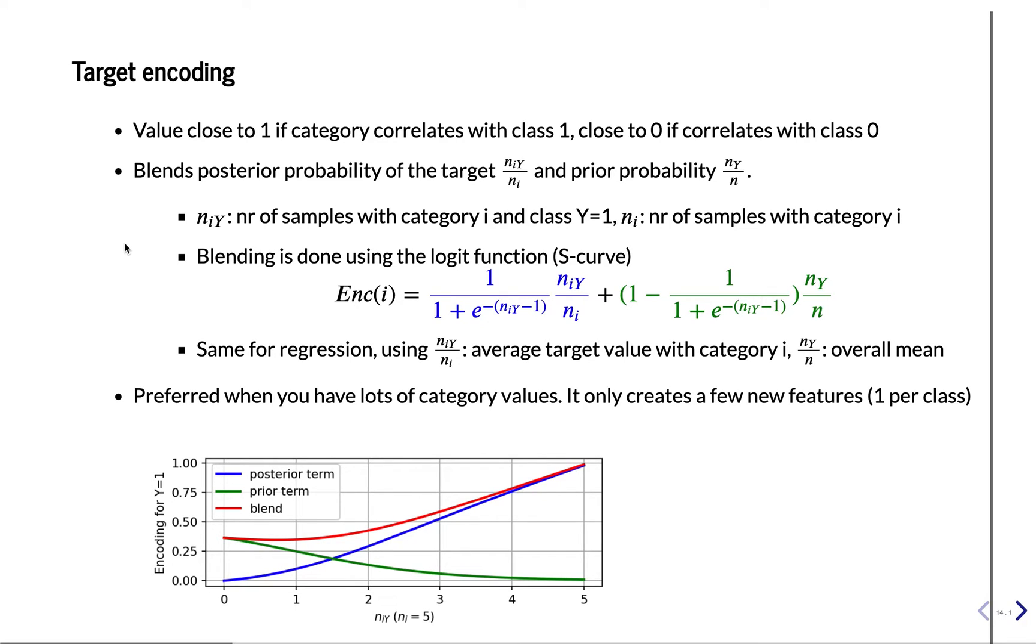So the method comes from Bayesian learning, and basically, it's a combination of the posterior, that's after we look at the category, what can we tell about the label, and the prior.